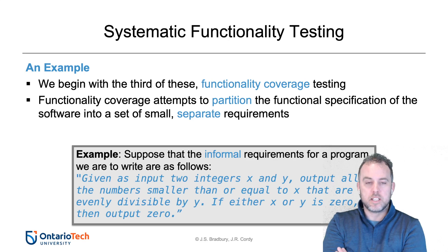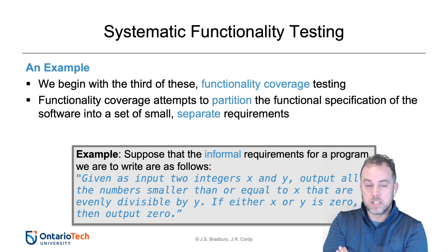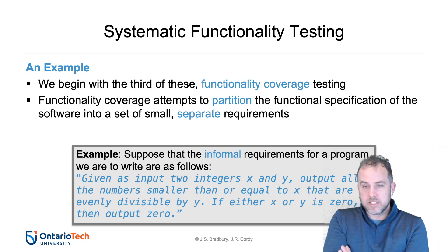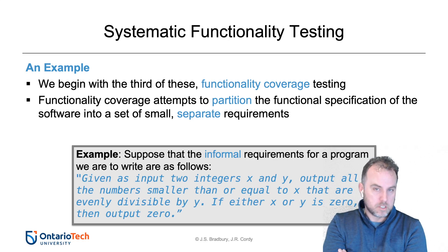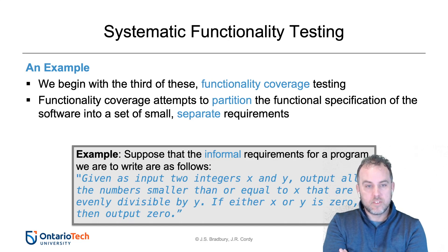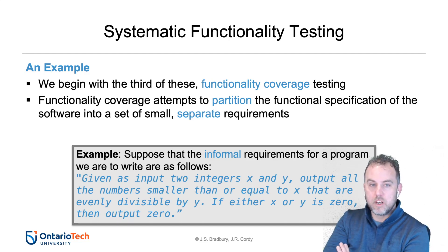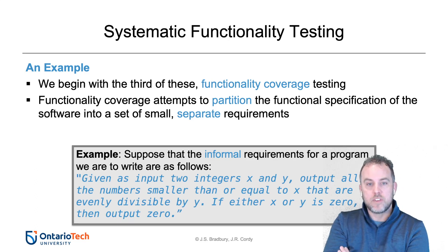Here's an example. This is not meant to be complicated — it's a size we can talk about in class. We're going to do systematic functionality testing with an English specification. Our informal requirement is: given as input two integers X and Y, output all numbers smaller than or equal to X that are evenly divisible by Y. If either X or Y is zero, then output zero.